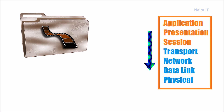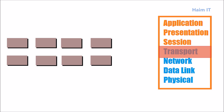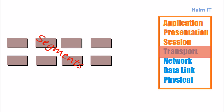As data moves from the application layer to the physical layer, it goes through a few transformations. The first transformation takes place at the transport layer, where the data is divided into smaller segments.